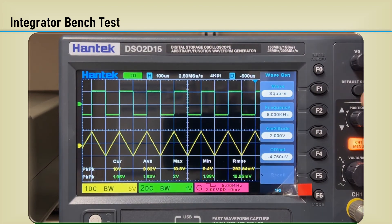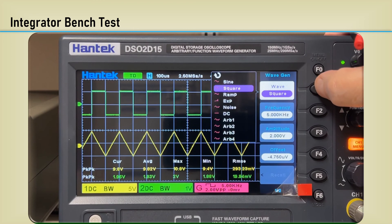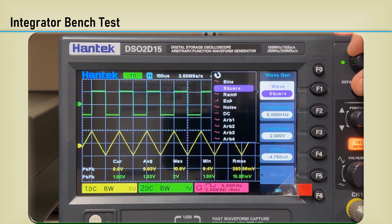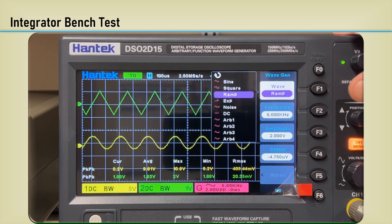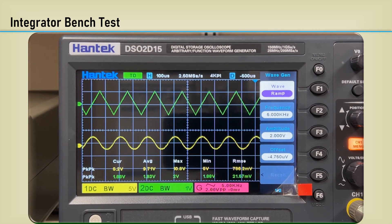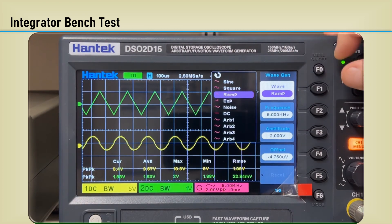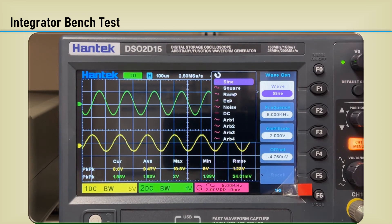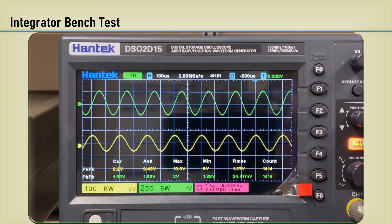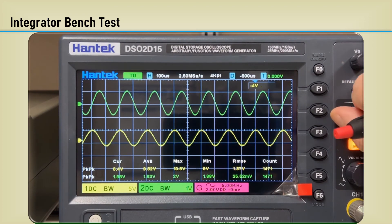If we change to a ramp input, you can see the output is a sinusoid, which makes sense because it's a low-pass filter. And if we put in a sine wave, we'll get a sine wave out. And since the integral of sine is cosine, it's 90 degrees out of phase with the input.